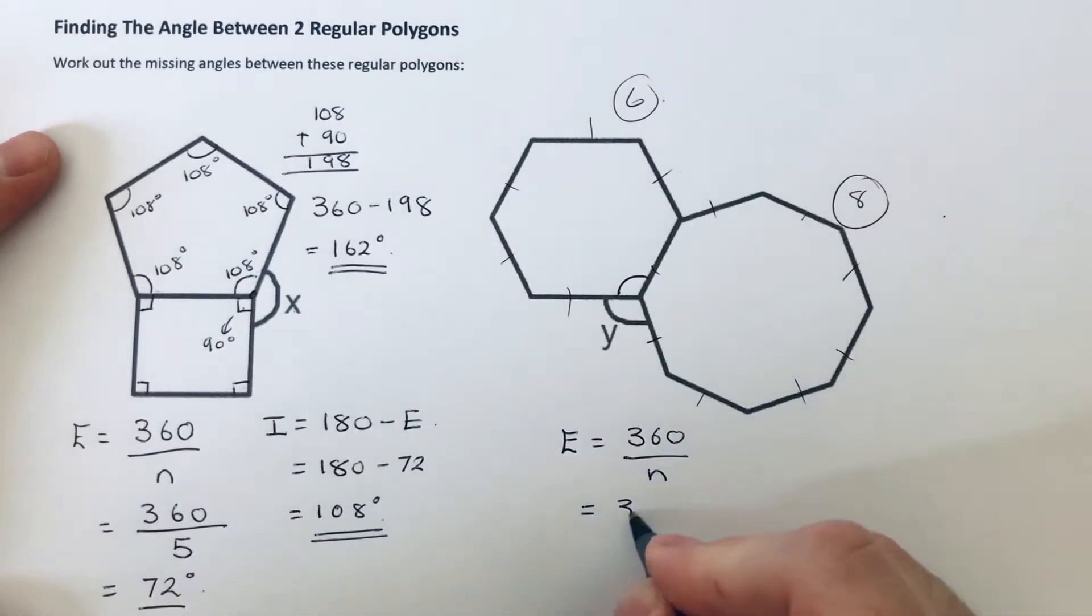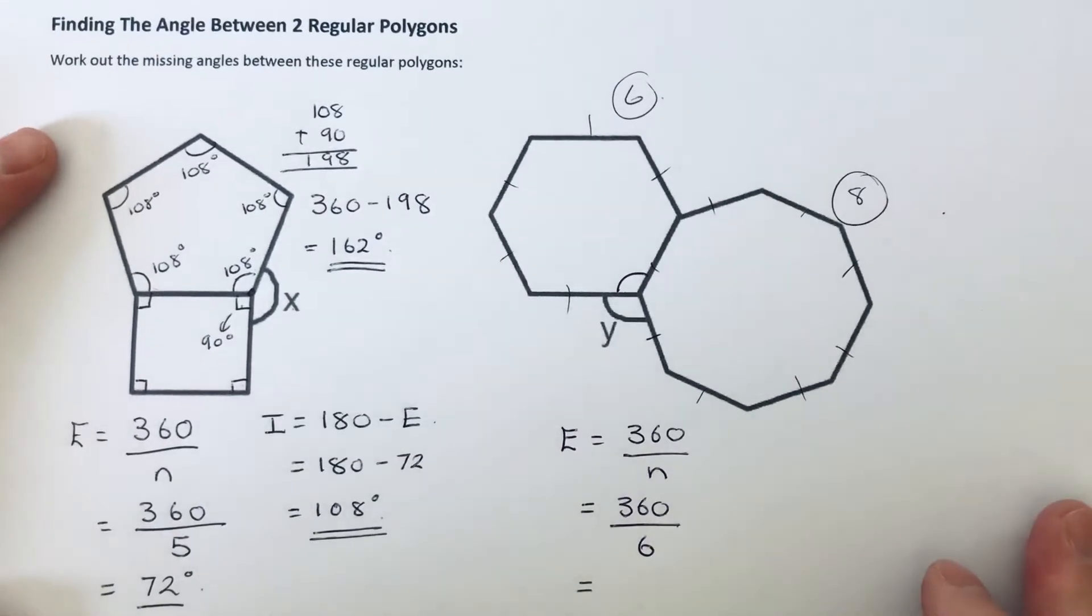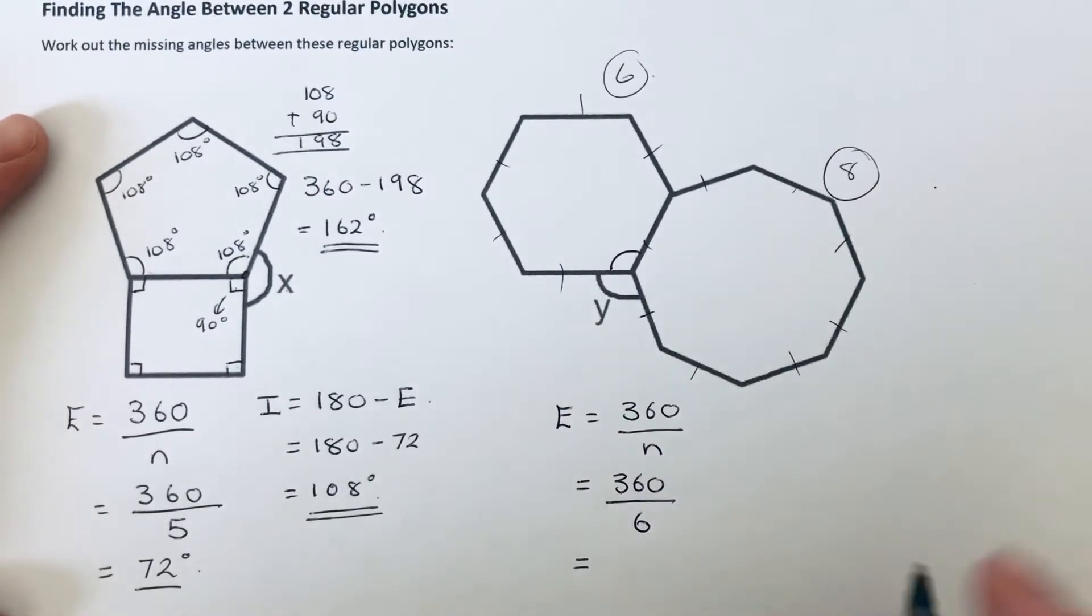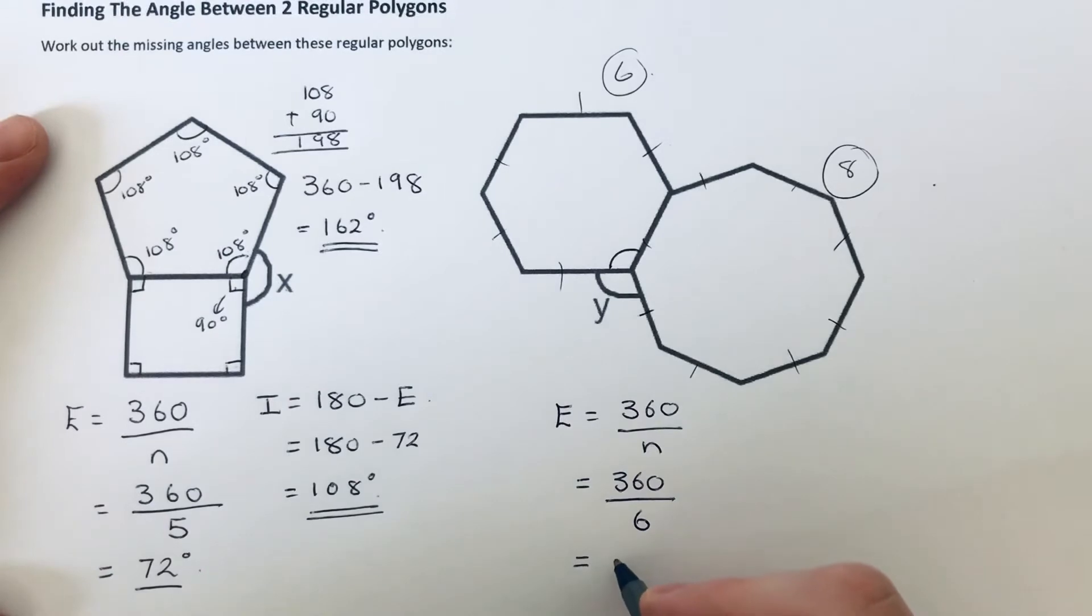So to get the exterior angle first, we work out the exterior angle by doing 360 divided by the number of sides. So 360 divided by 6 because our hexagon's got six sides. So 360 divided by 6 comes out 60 degrees.